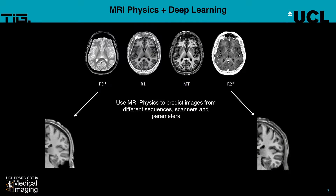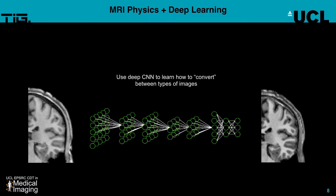We will use these predictions — which tell us about subtle differences between different machines — to teach computers, using deep learning and very advanced machine learning methods, to transform an image acquired from machine A into an image acquired on machine B. This means that measurements will become more stable and can also be used in a clinical setting.